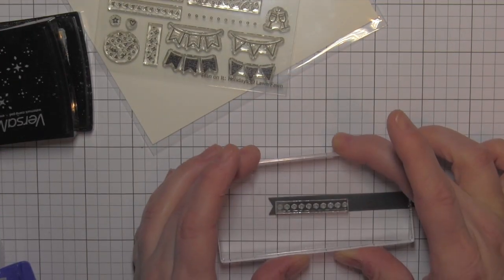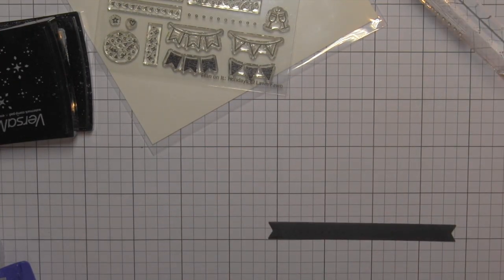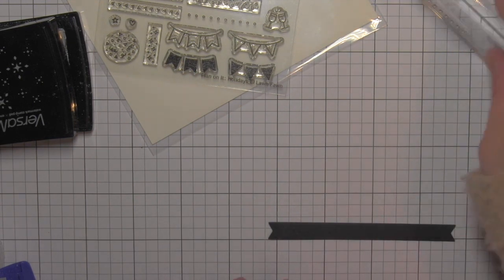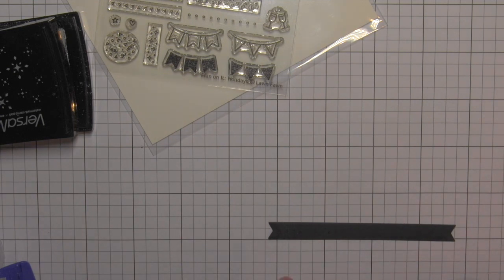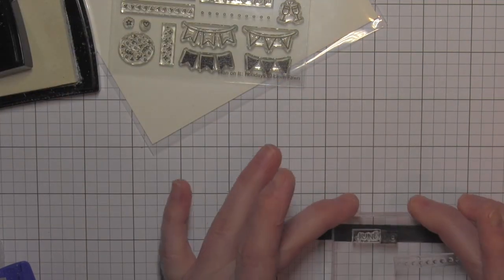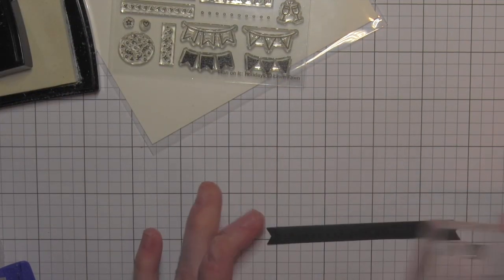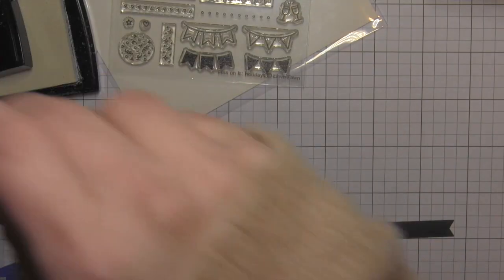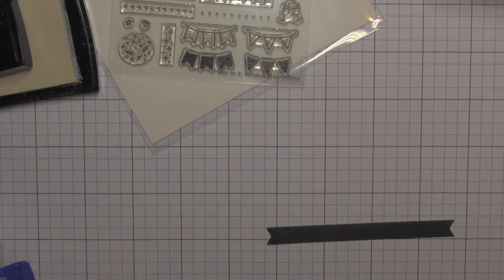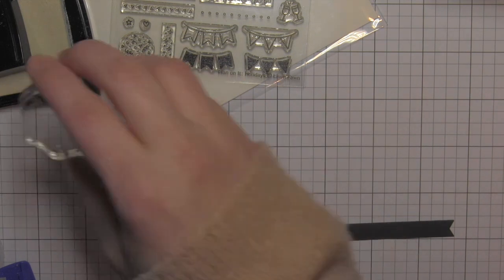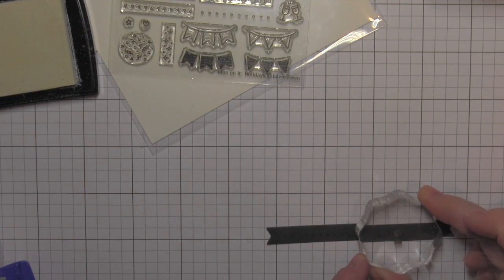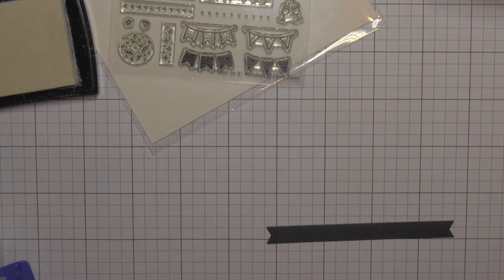Using the Plan On It Holidays stamp set on my banner, I'm going to stamp a date and some little elements. The Plan On It stamp sets are fantastic not only for planners but for adding dates or little words on scrapbook pages. I'm going to add my date stamping everything with VersaMark ink and then heat set it with white embossing powder.